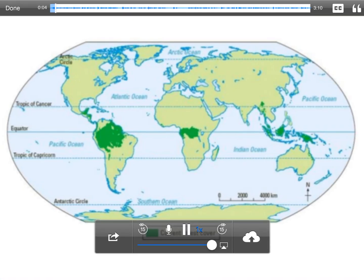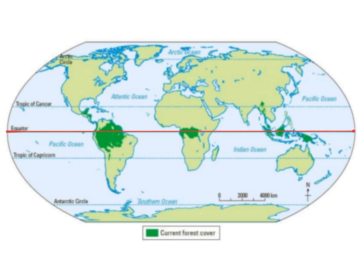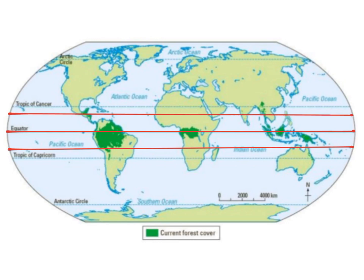When we look at a map of the world, we can see that the vast majority of tropical rainforests are located either side of the equator. To the south, most tropical rainforests fall within this point marked on the map, and to the north, most tropical rainforests fall within this band marked on the map. This narrow area, either side of the equator, is contained within the tropics, being south of the Tropic of Cancer and north of the Tropic of Capricorn.